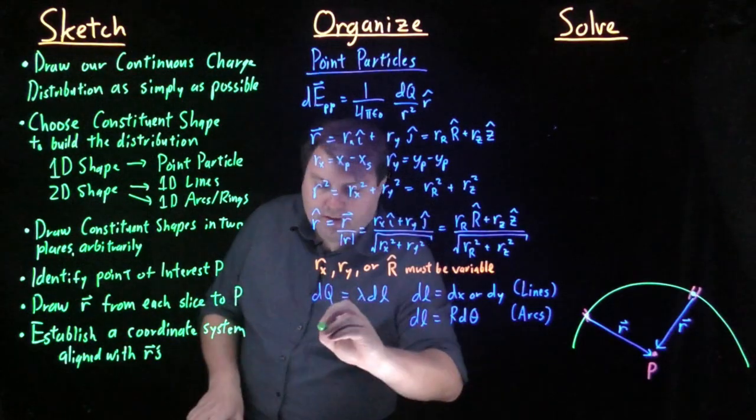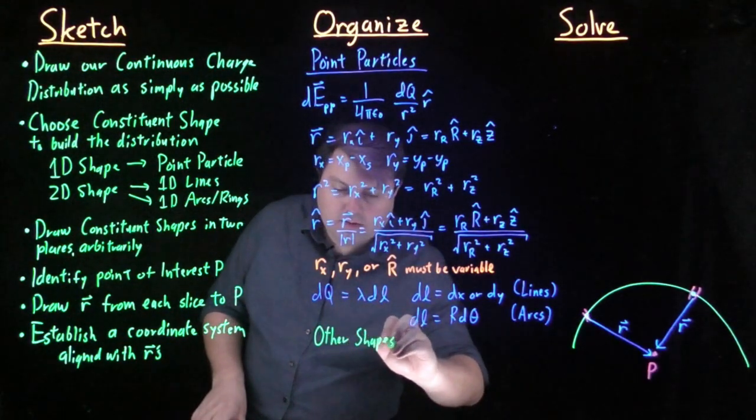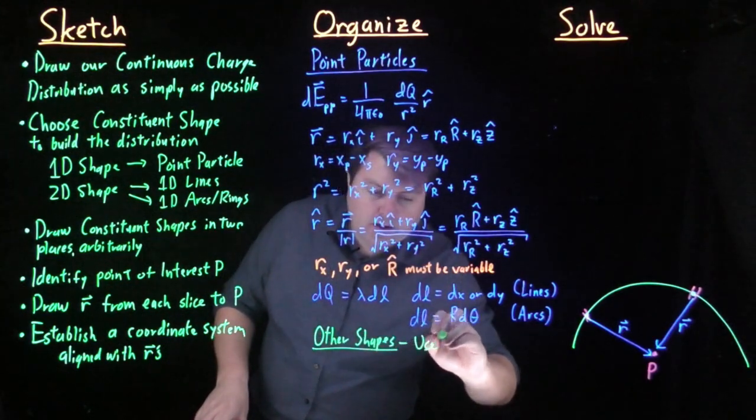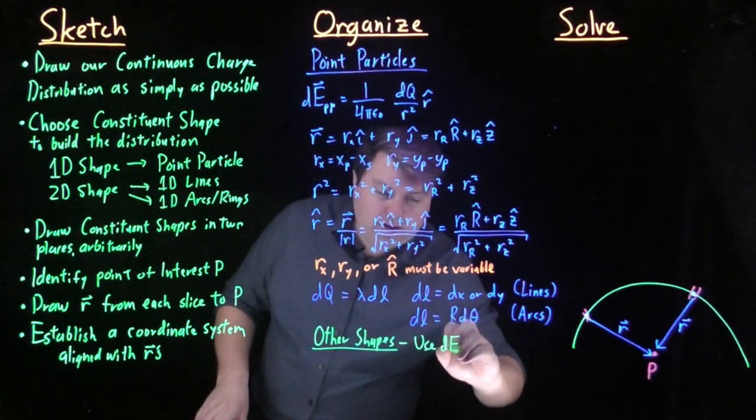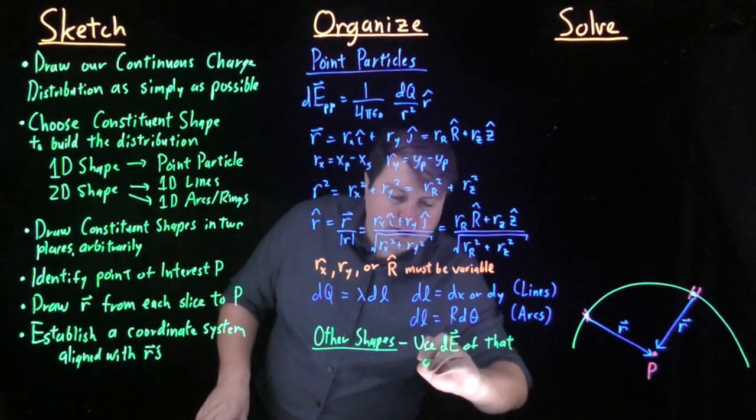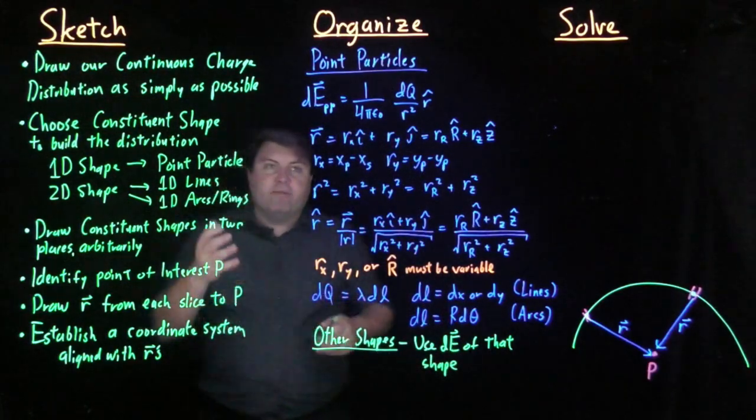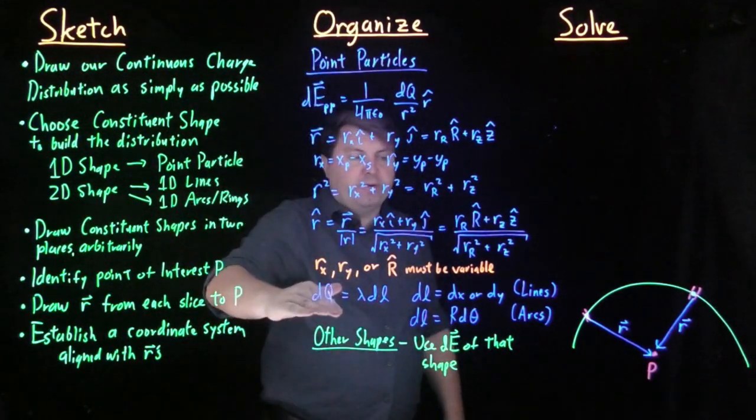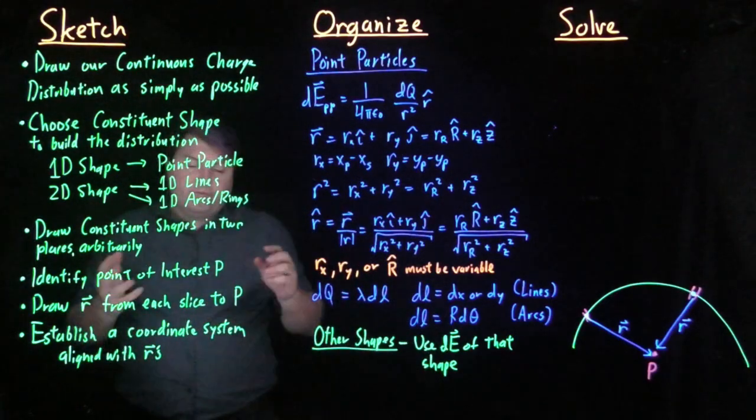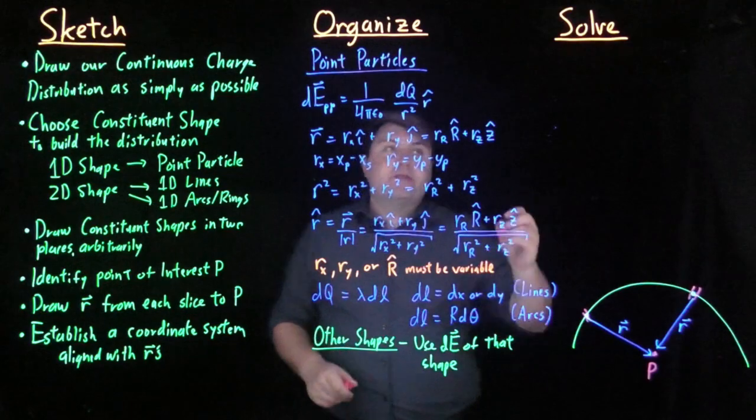For other shapes, we want to use the dE of that shape. We don't have space or time to deal with it. We're going to build all of this from point particles first, and then we can revisit how we do it with two-dimensional shapes a little bit later.